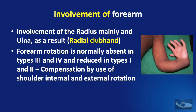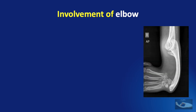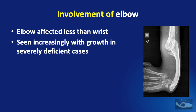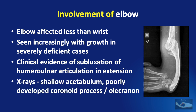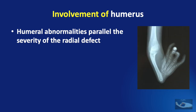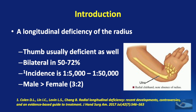Forearm rotation is normally absent in types 3 and 4, and reduced in types 1 and 2, with compensation through shoulder internal and external rotation. Elbow involvement can occur but is less common than wrist involvement; it is seen increasingly with growth in severely deficient cases. Clinical evidence of subluxation of the humero-ulnar articulation is sometimes seen in extension, and X-rays may show a shallow acetabulum, poorly developed coronoid process, or olecranon. In severe cases, humeral abnormalities can also be seen. This video focuses mainly on longitudinal deficiency of the radius, i.e., involvement of the forearm, classically known as radial club hand.